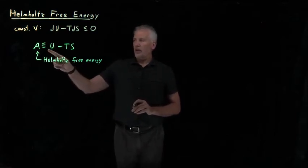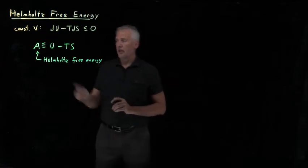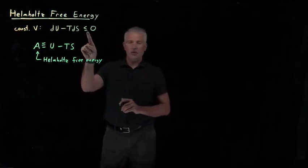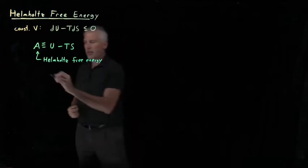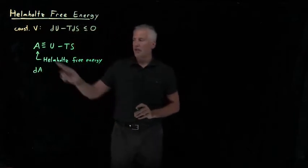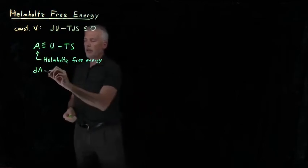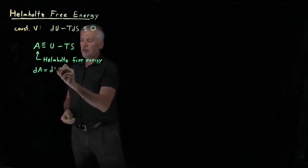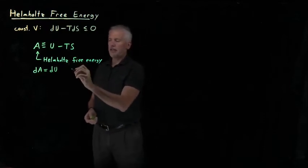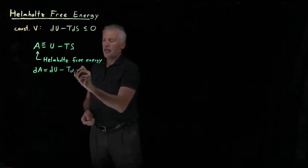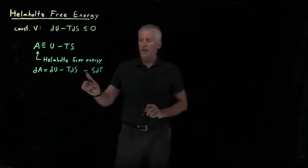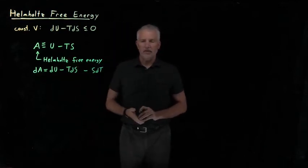We're interested in knowing the differential of U and minus T times the differential of S to predict whether the process is spontaneous or not. So let's take the differential of the Helmholtz energy. On the left, A becomes dA. On the right, the differential of U is dU. Product rule tells us the differential of TS is TdS and SdT, and those each have a negative sign in front of them.